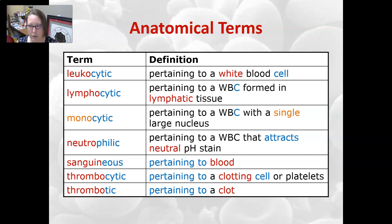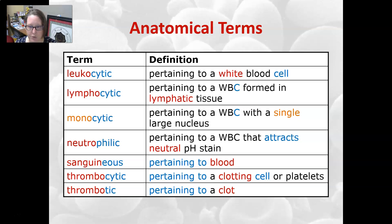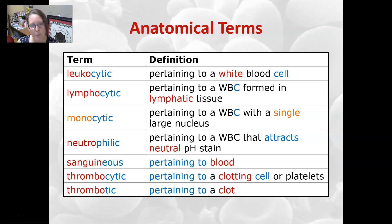Lymphocytic means pertaining to a white blood cell that is formed in lymphatic tissue — the lymphocyte. Monocytic is pertaining to a white blood cell with a single large nucleus, which is a monocyte, also known as a macrophage if it's out of the circulation. Neutrophilic is pertaining to a white cell that attracts a neutral pH stain, which is a neutrophil. Sanguinous also means pertaining to blood. Thrombocytic means pertaining to a clotting cell or platelets — the medical term for platelets is thrombocyte. And thrombotic means pertaining to a clot. That wraps up all of our combining forms, prefixes, suffixes, and anatomical terms for the blood chapter. Thank you.